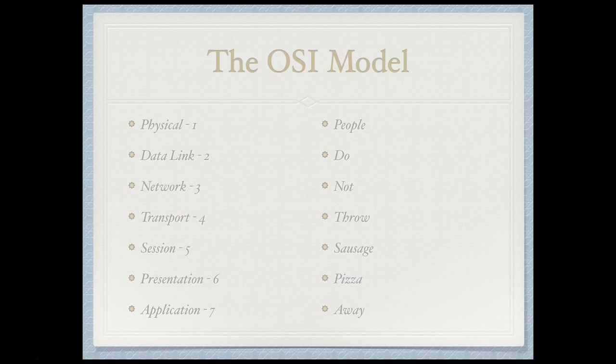Here we're starting at layer 1 and working our way to layer 7: physical, data link, network, transport, session, presentation, and application. 'People do not throw spinach pizza away,' 'people do not throw sausage pizza away,' 'people do not throw sardine pizza away' — anything that helps you remember the seven layers of the OSI model using this mnemonic, feel free to modify as you need to.